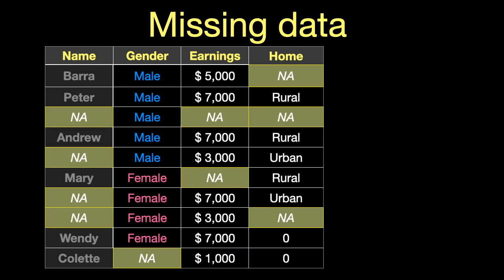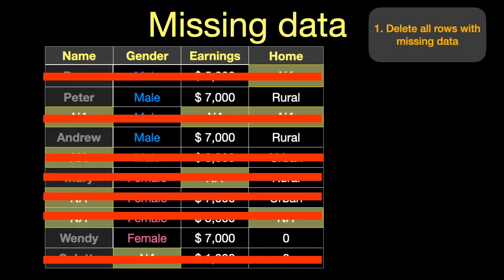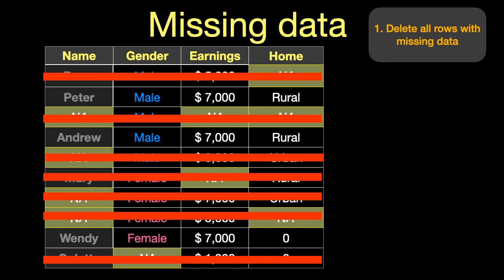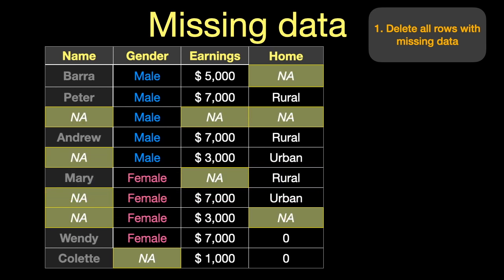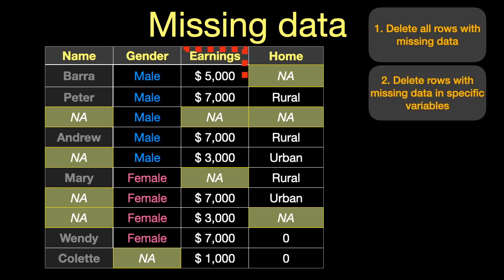Let's take a look at the various strategies you can employ when faced with missing data. Let's imagine we've got missing data all over our data set. I'm going to walk you through five things you can do to deal with these missing values. The first thing we can do is delete all rows with missing data, but that's going to take out almost your entire data set, so it's almost invariably a bad strategy.